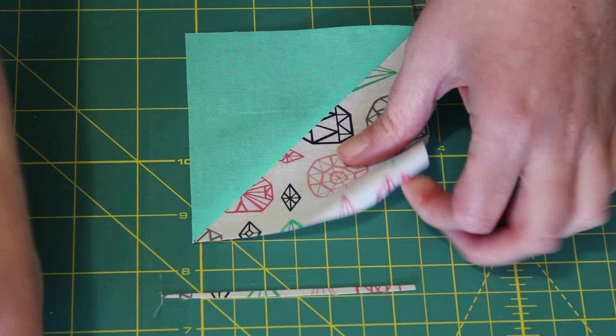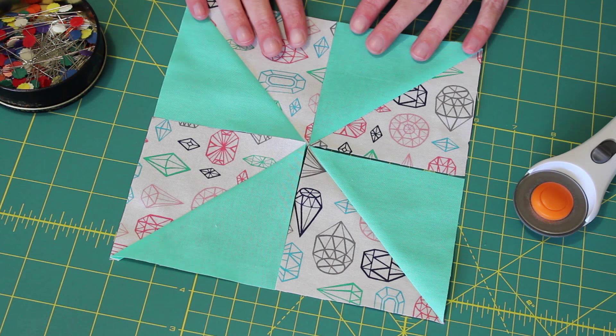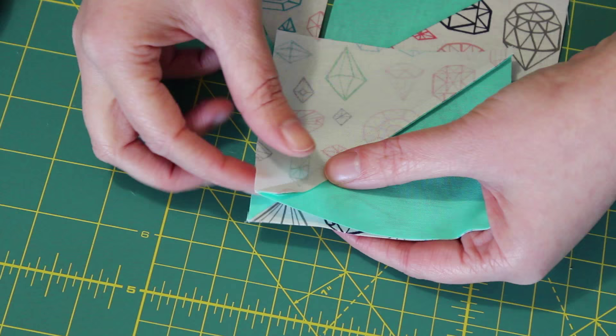Lay out the half square triangles in this way. Separate the rows slightly and then flip one square over onto the other. To help achieve a perfect centre end, nest the two seams of the half square triangles together and then pin the edge into place.